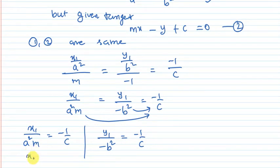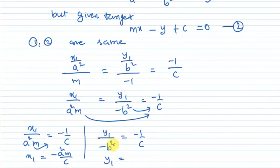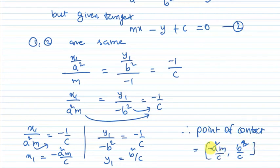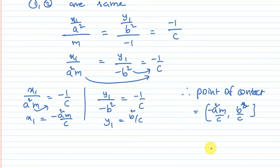And y1 equals b squared by c, since the two negatives cancel. Therefore the point of contact P equals minus a squared m by c, comma b squared by c — that is, P = (−a²m/c, b²/c).